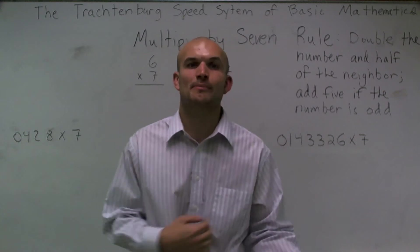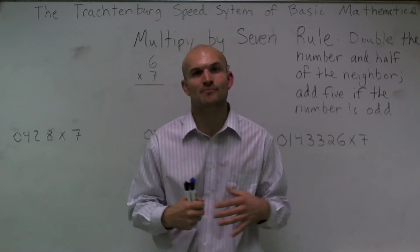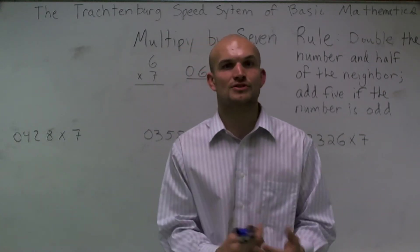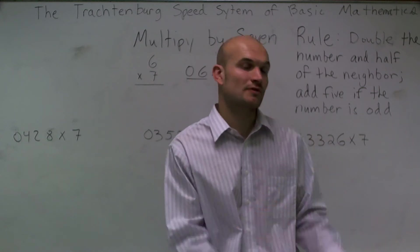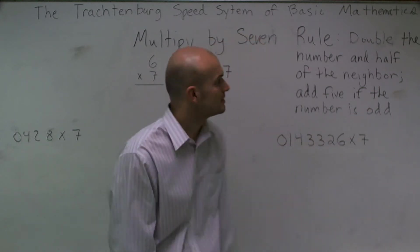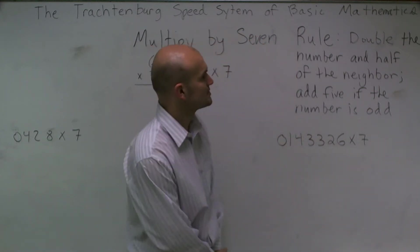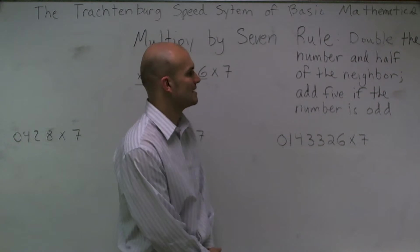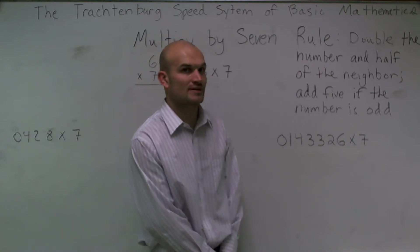If you've already seen my previous videos, you'll understand that multiplying by 7 is very similar to the rules of the other numbers we've learned to multiply by. So multiplying by 7, we want to double the number and add half of the neighbor, then add 5 if the number is odd.